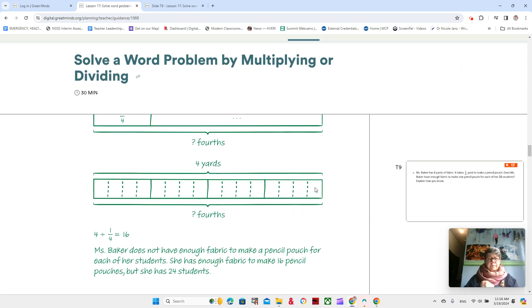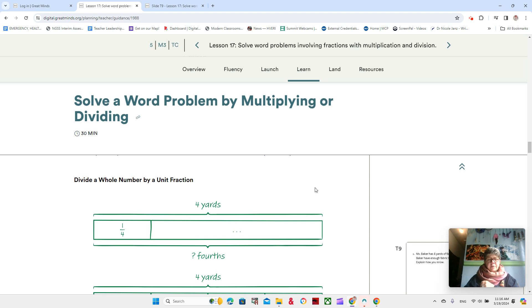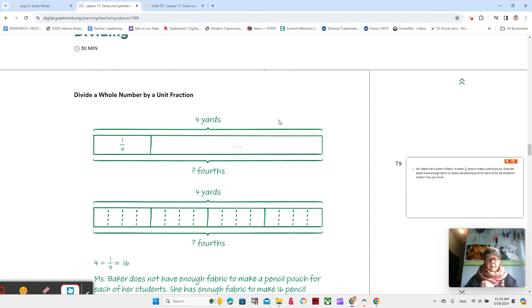There's another way to do it. Here's the second way we did it. Four yards. How many fourths? Show how many fourths it is. It's 16 fourths. It's not enough fourths.